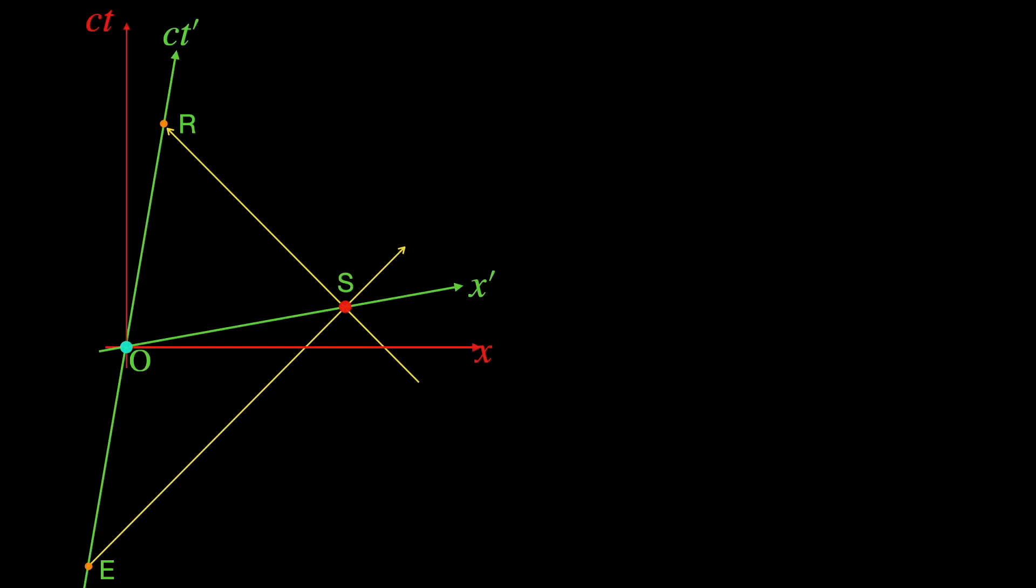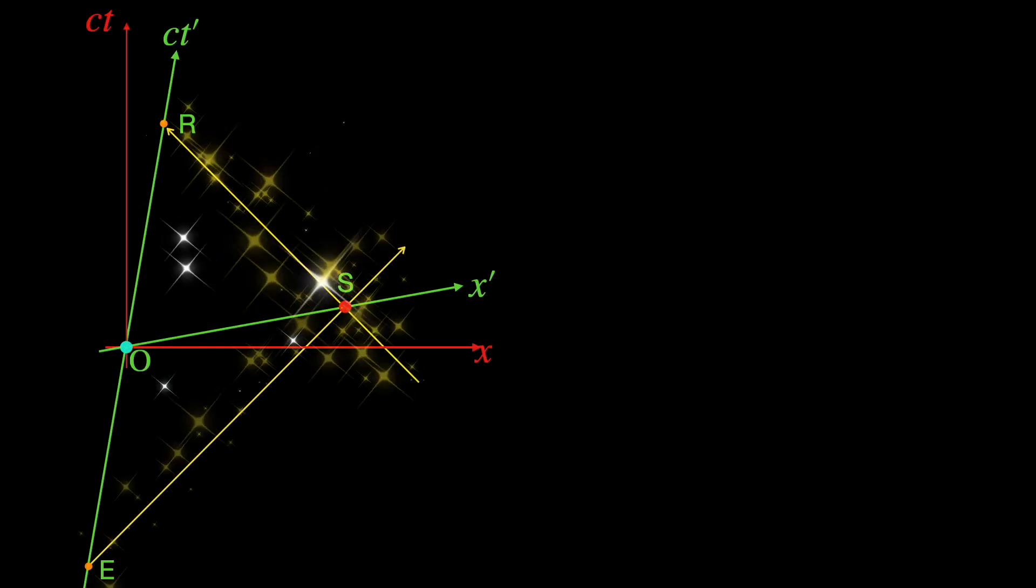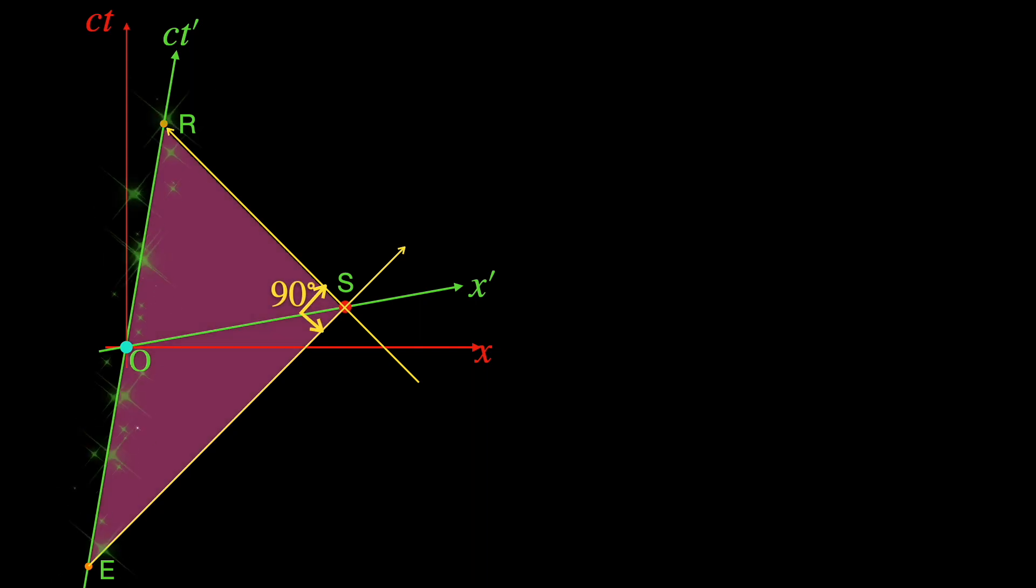Now in our space-time diagram the outgoing and incoming light paths form a right angle triangle with the time axis of the moving frame. The hypotenuse is along the time axis with origin O being its midpoint. So the moving frame space axis is the line connecting the middle of the hypotenuse O to the right angle vertex S.